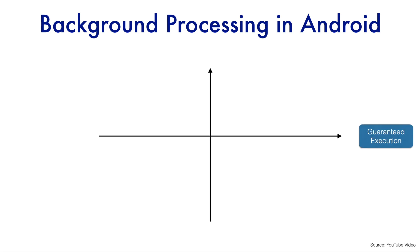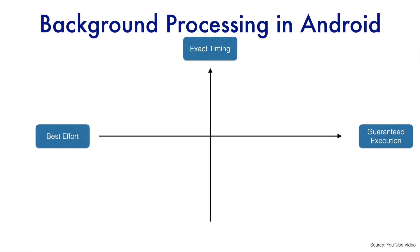The first axis is whether you want something to always be executed — that is, do you want a guaranteed execution, or is it not so important as long as the system tries its best. The other axis is whether you want it executed at an exact particular moment in time, like every day at 10 o'clock or 12 o'clock, or whether you want your tasks to be deferrable — not strict on the timing.